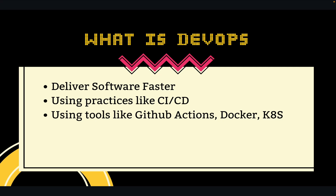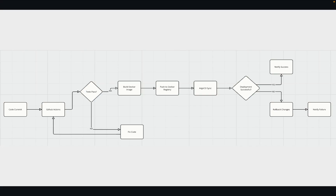Let's look at a simple pipeline of a DevOps-enabled system. This workflow starts from a code commit. Once you commit the changes, your GitHub Actions workflow triggers. It probably runs some tests first. If those pass, then it builds your Docker image, pushes it to a registry, and then maybe your Argo CD kicks in, picks up the image, and deploys to your Kubernetes environment.